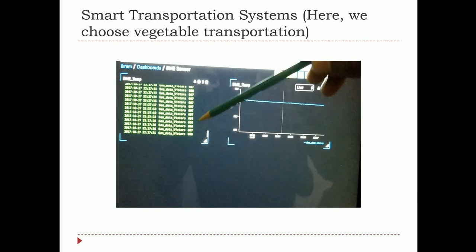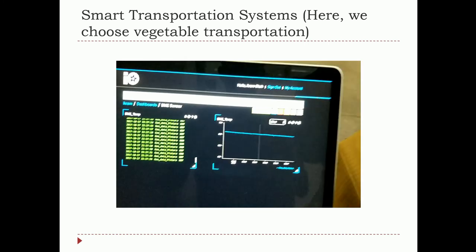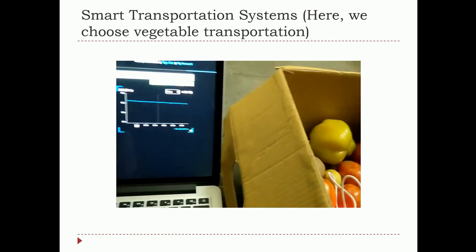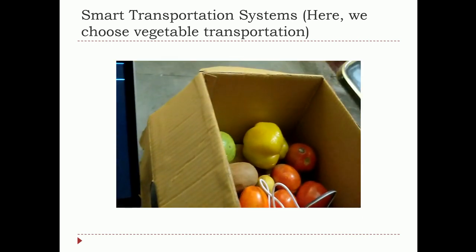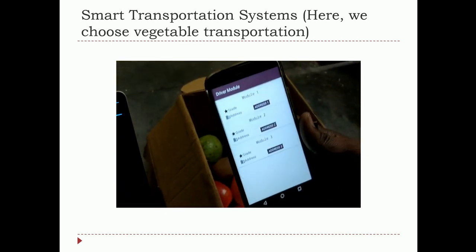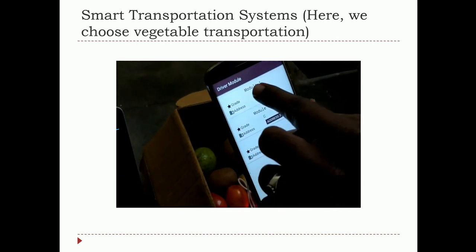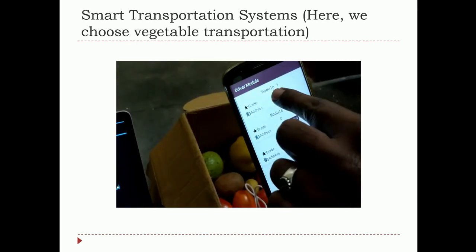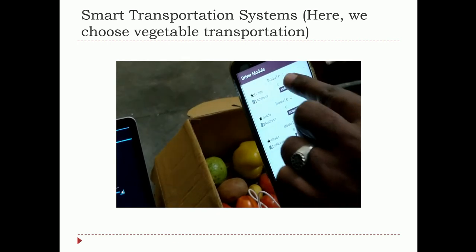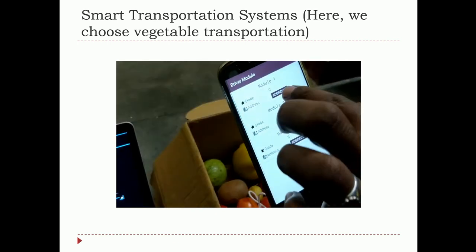Once the data is on the cloud, you can see it being recorded consistently in real time. Analytics are then made and a rating is arrived at — indicating which box has to be delivered at which place. I am now opening the app we designed, and after some point in time you will get the grade for each box. The first box has got grade C, meaning poor quality, so it has to be delivered at the earliest.